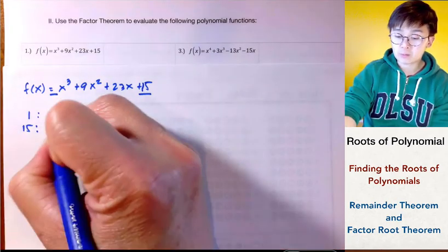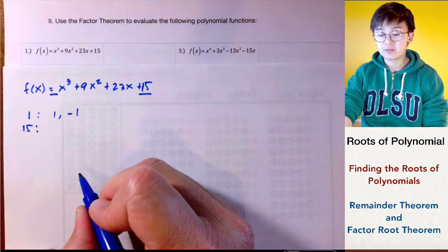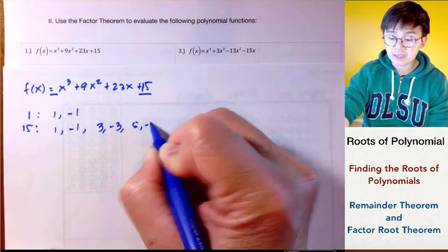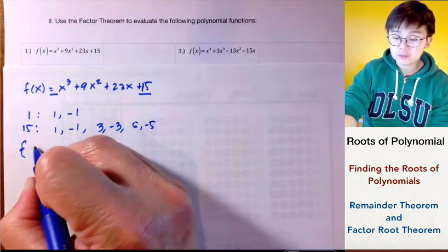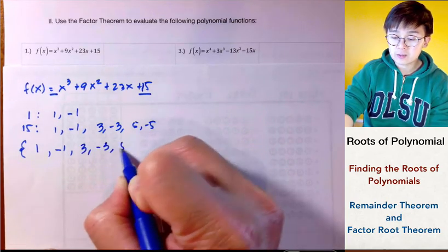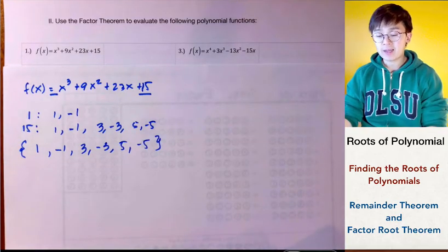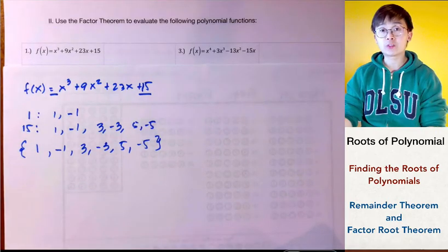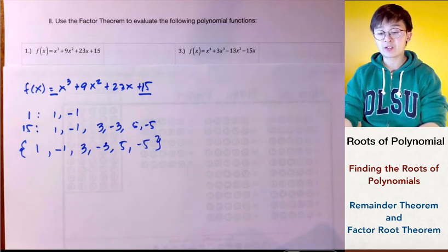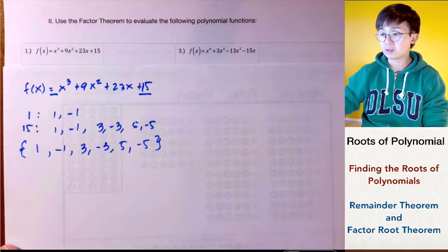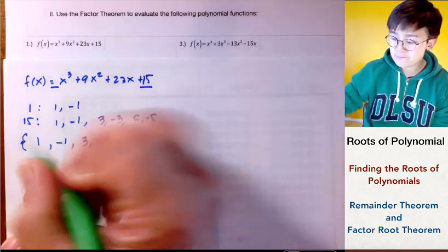The factors of 1 are 1 and negative 1, and the factors of 15 are 1, negative 1, 3, negative 3, 5, and negative 5. These are the candidate possible solutions. Whichever candidate gives a remainder of 0 in synthetic division is a verified solution. This will be a trial-and-error procedure — we'll start with negative 1.